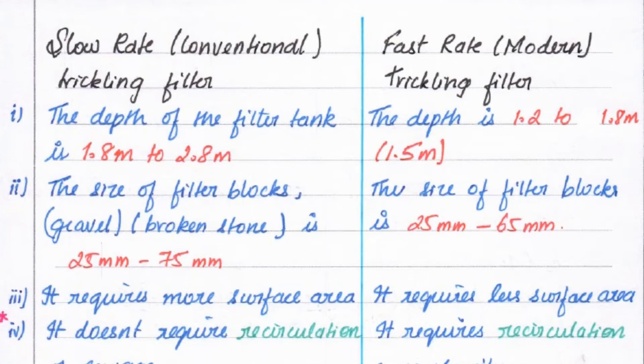Hello friends, welcome to Civil Engineering Exam. Today we are going to see the difference between slow rate trickling filter and fast rate trickling filter. The trickling filter is mainly used for treating wastewater in the secondary treatment process.